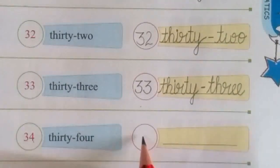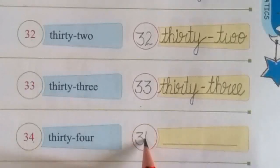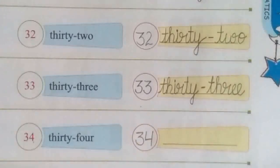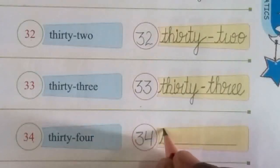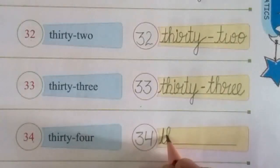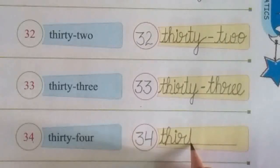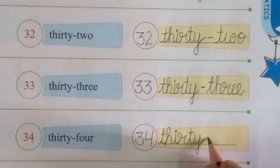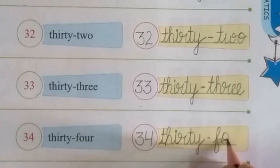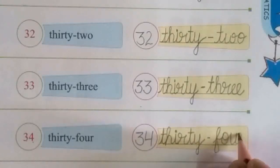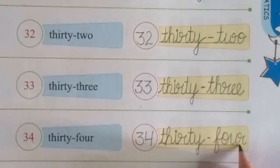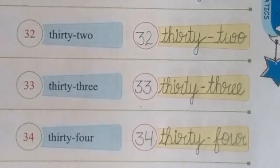Next: 3, 4 — 34. Write here number 34. The number name is T-H-I-R-T-Y, 30, dash, F-O-U-R, 4. Thirty-four.